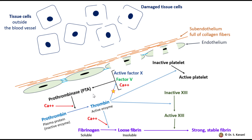Another function of thrombin is activating platelets. Recall that activation of platelets is absolutely necessary for the formation of a platelet plug and also a blood clot. Thrombin participates in this positive feedback system by activating more platelets to release their chemicals, and also by speeding up the binding of active factor 10 to factor 5 and calcium ion, speeding up formation of prothrombinase.